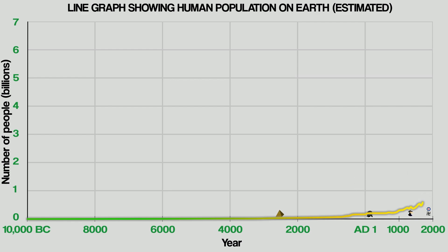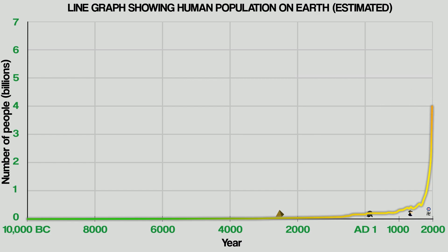Here's where things get a little crazy. In 1804, the world hits 1,000 million — that is 1 billion people. Modern humans have been around since 300,000 BC, so it took us a very long time to reach that number. But watch what happens next. The world hits 2 billion in 1927, reaches 3 billion in 1960, 4 billion in 1974, 5 billion in 1987, 6 billion in 1999, and 7 billion in 2011.